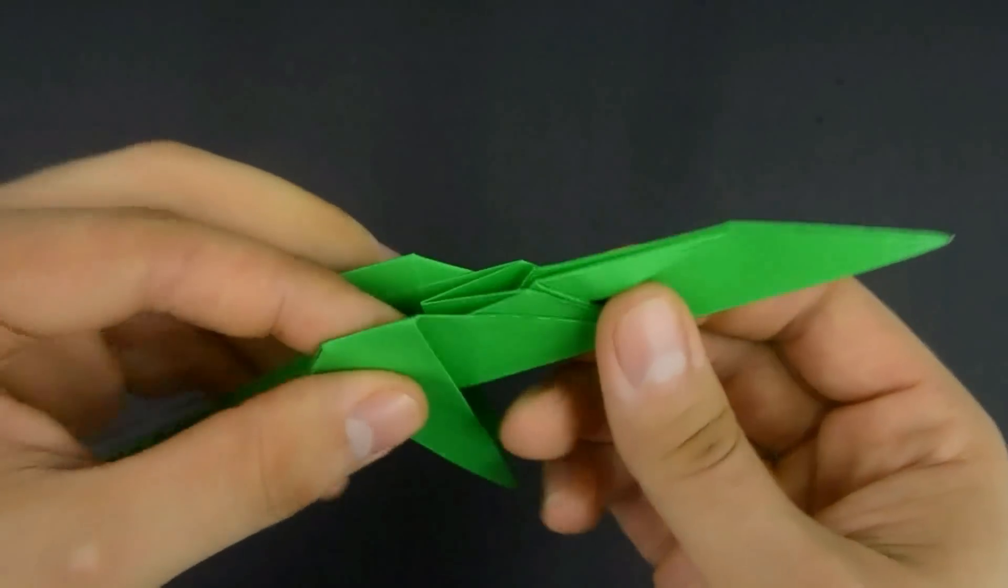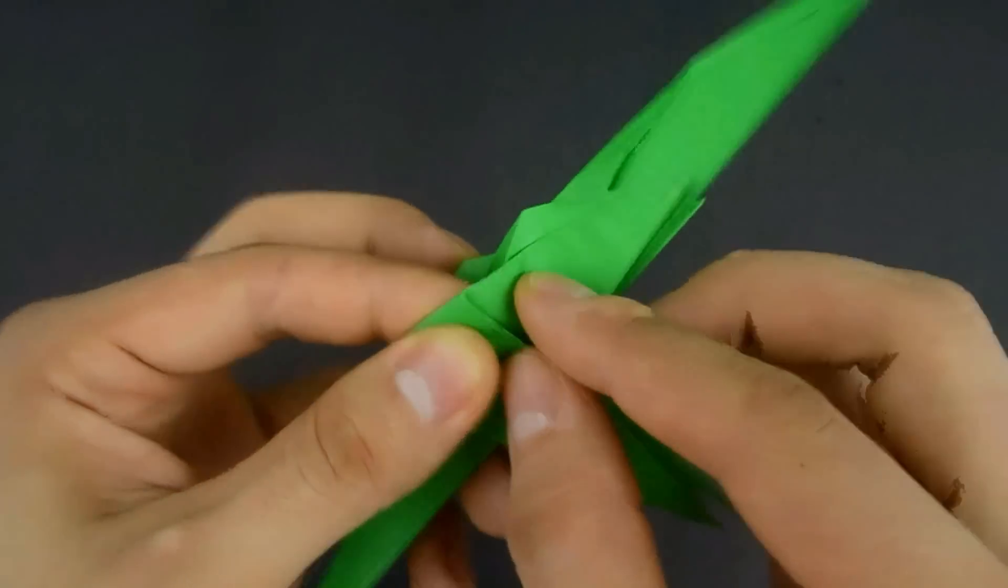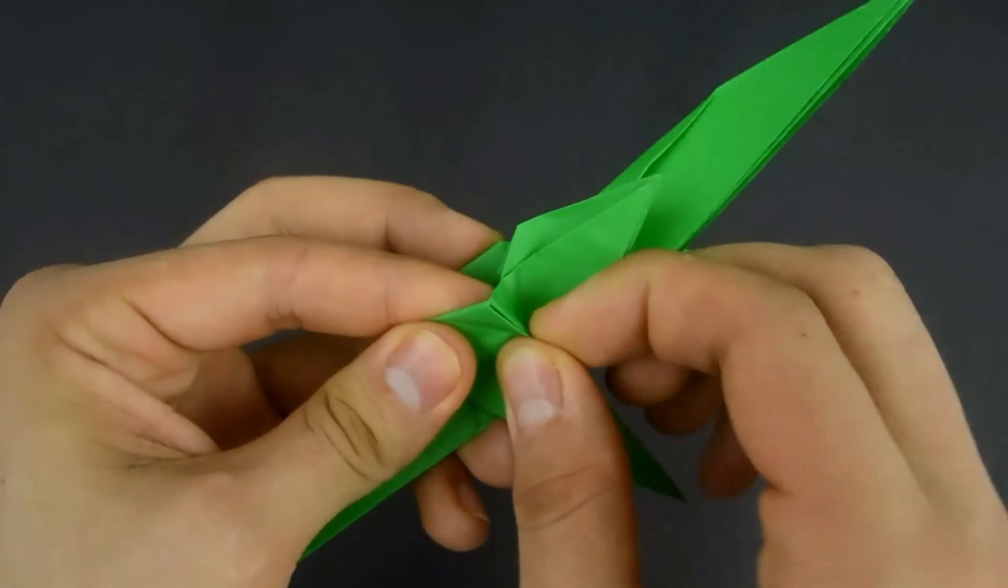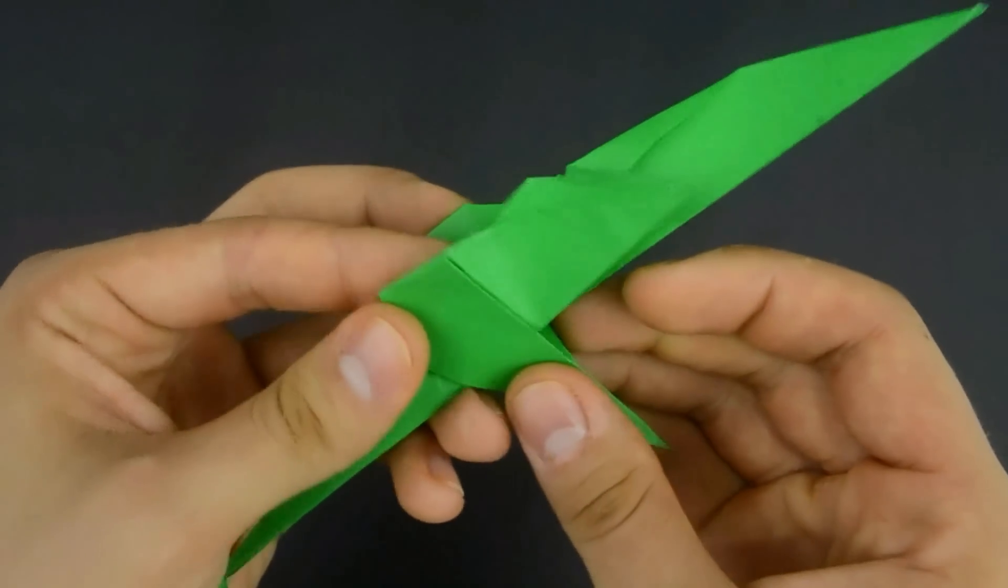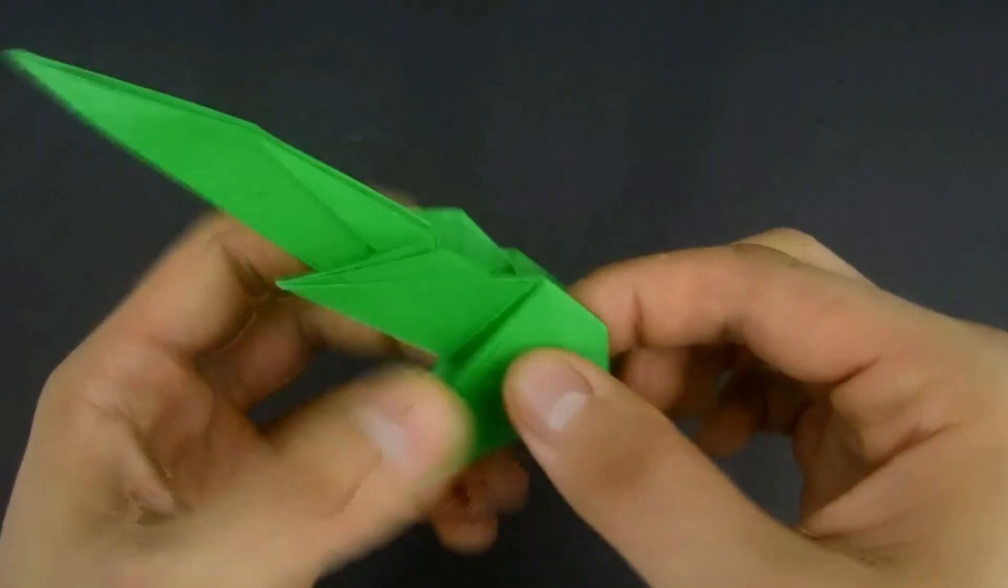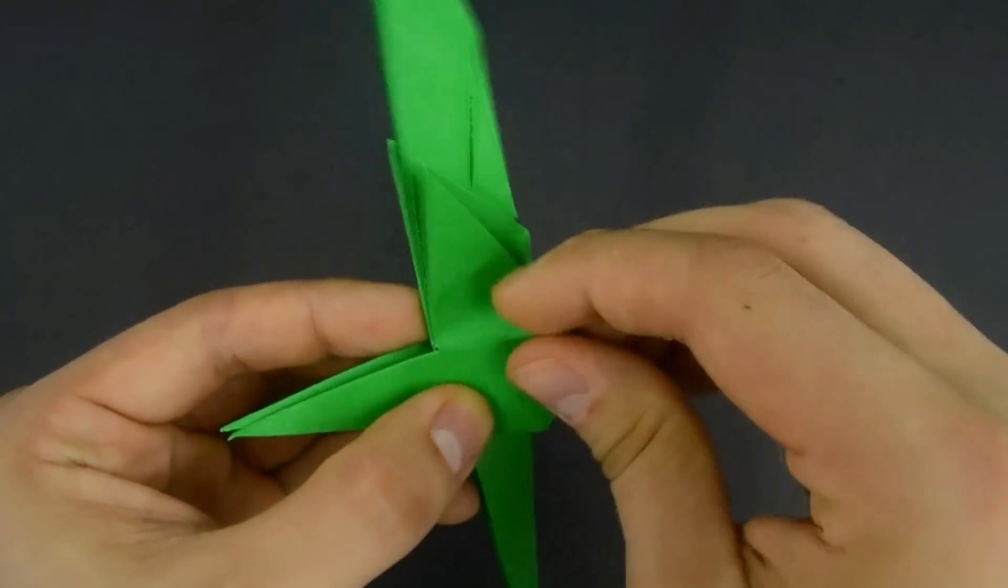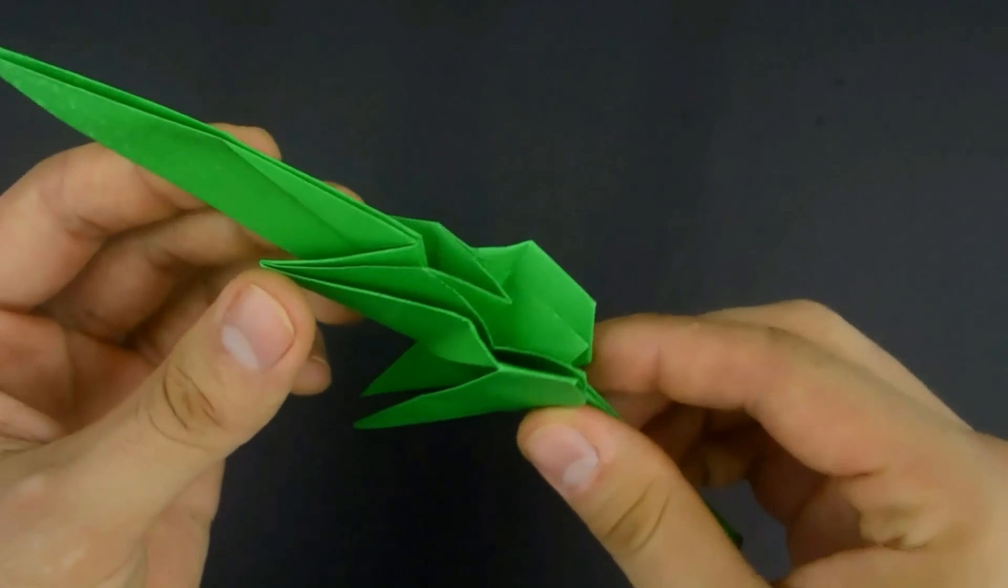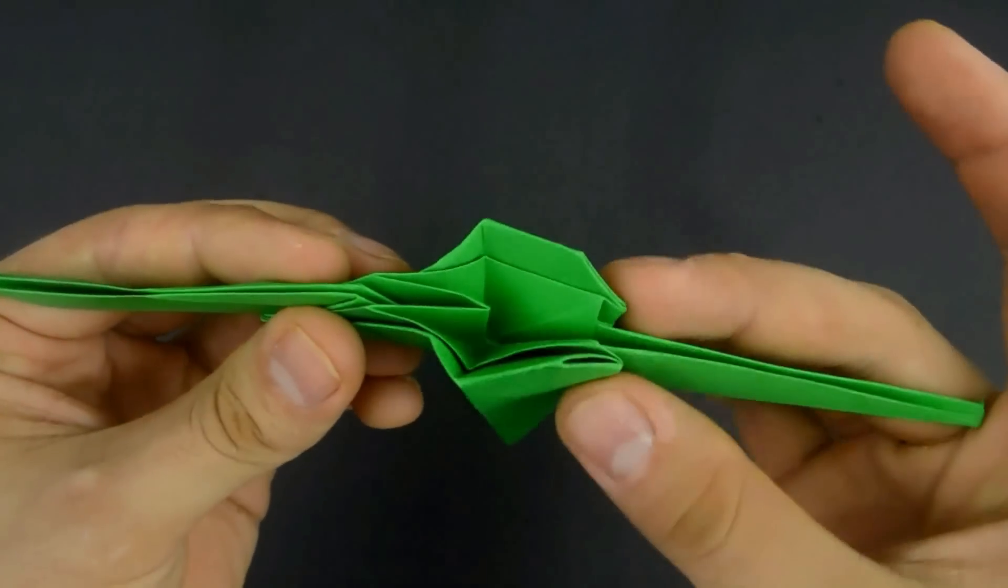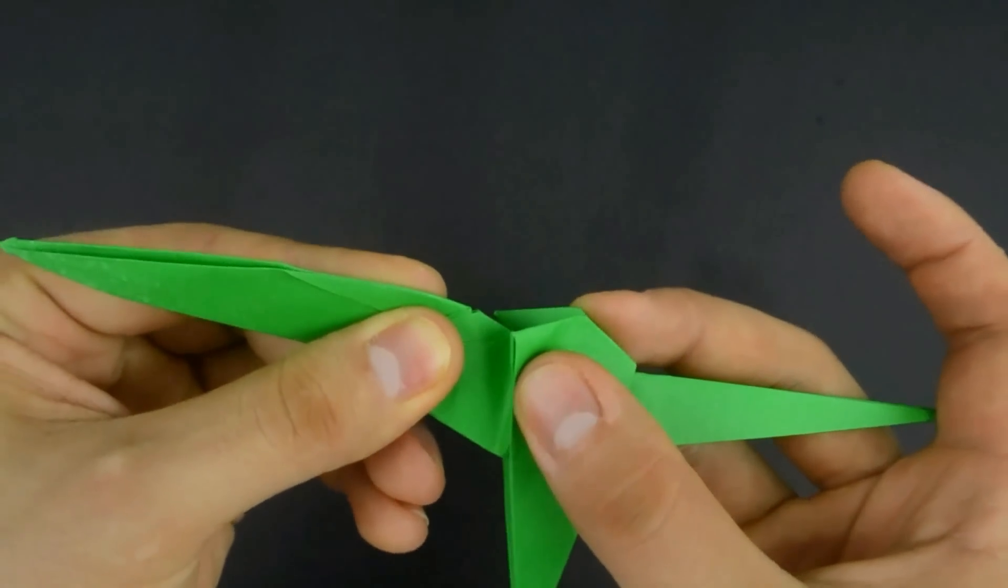Now make a vertical crease using this line as a reference. First on this side, then the same on the other. And bring the paper back into the body. Like this.